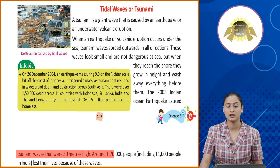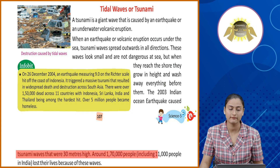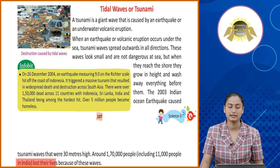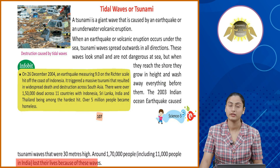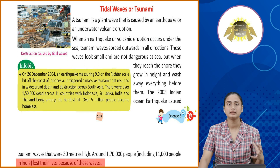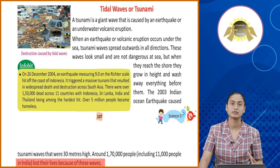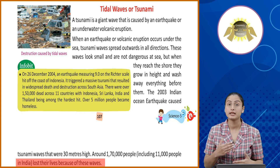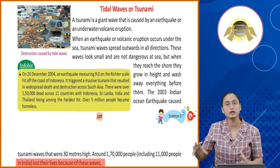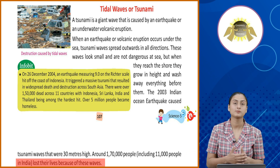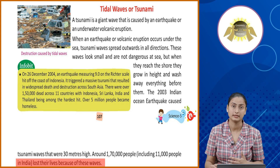Around 1,70,000 people, including 11,000 people in India, lost their lives because of these waves. Yeh jo waves hoti hai, yeh earthquake ki wajah se ya phir volcanic eruptions ki wajah se aati hai. Agar yeh sea mein hoti hai toh zyada nuqsaan nahi pohunchata, lekin jaise yeh kinaron ki taraf aa jaati hai, toh wahan ke aas paas ke shehron ko tabah kar deti hai.